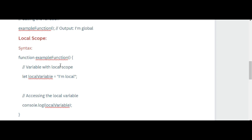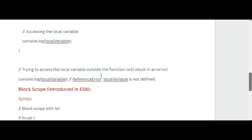Variables declared inside a function or block have local scope — they are only accessible within that function or block. Here is the local scope syntax: inside exampleFunction, let localVariable = 'I am local', and console.log(localVariable). Trying to access the local variable outside the function will result in an error.